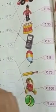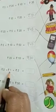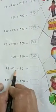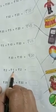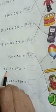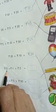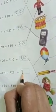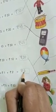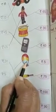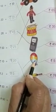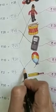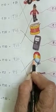Now next — rupees 2 plus rupees 1 plus rupees 2. 2 plus 1 is 3, and 3 plus 2 is 5. Rupees 5. The cost of this toy is rupees 5, so we will match it with this toy.